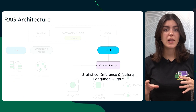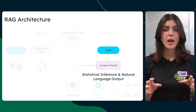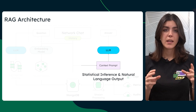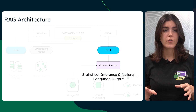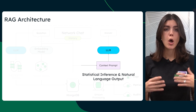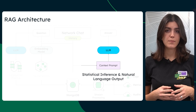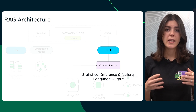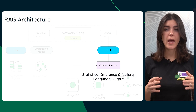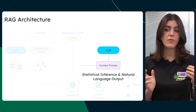Once the relevant data is identified within MongoDB, a second LLM pass takes place. Here, the model converts raw data into natural language explanations, performs statistical inference to detect patterns and anomalies, and can even identify unusual access patterns to help pinpoint the root cause of any issue.